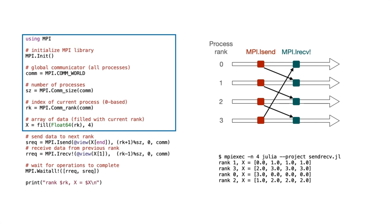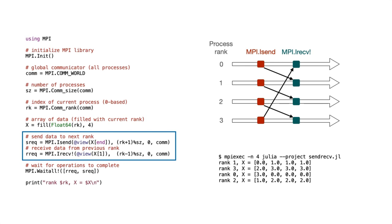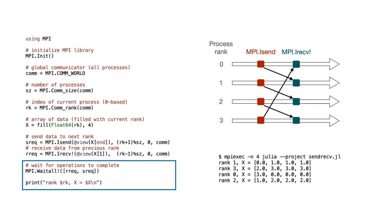Here's an example of a simple MPI program. We start by initializing the MPI library and determining the necessary information such as the total number of processes and the index of the current process, and we build an array of data that will form our buffer for the communication. Next we perform our communication operations using iSend and iReceive. The iSend will send the last element of the buffer to the next rank in order, and iReceive will use the first element of the buffer as storage for the incoming message. These are asynchronous operations, so we can do other computation, and when we're ready for the result we call MPI.Waitall, which will block until the communications are completed, and then we can print the results.